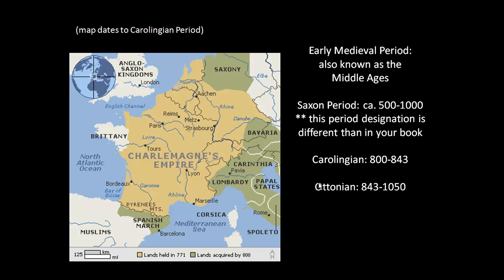We attributed this type of artwork production to the fact that in the Saxon period, in this region of Europe — formerly the western region of the Roman Empire — they did not have a centralized political system that would result in the commissioning of large-scale works, particularly of architecture. Things change in the Carolingian period, and that's what we're going to be looking at today.